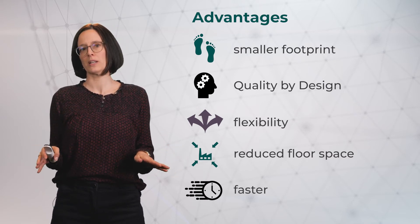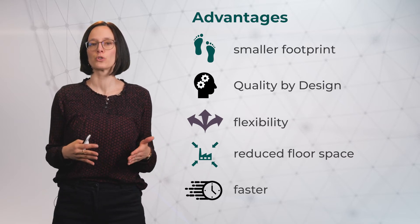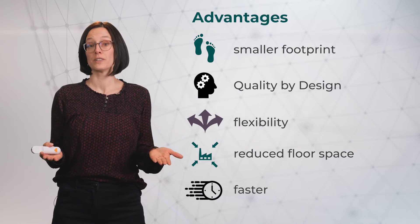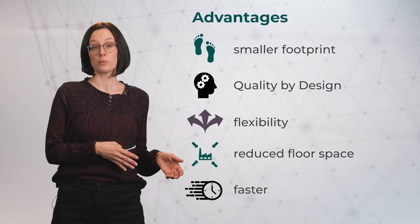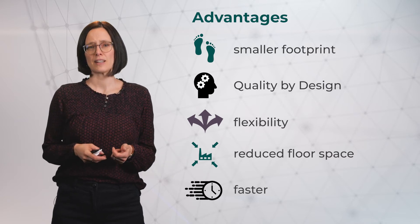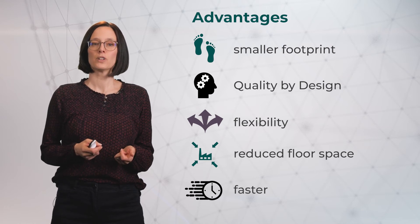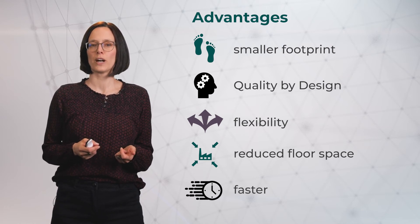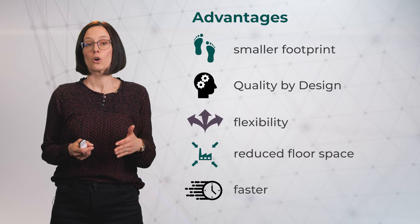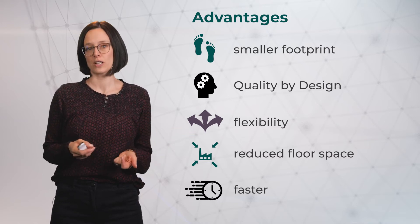Batch equipment does not work that way. A batch blender or a batch granulator have to have a certain fill level in order to function correctly — they cannot be operated almost empty to achieve good quality. So you need smaller equipment, and scale-up means you need to move from one size piece of equipment to the next, which can at times be very challenging. With continuous equipment, you would have the ability to run with lower throughput for a short time during development — perhaps several kilograms — or at high speed for a long time, producing in the range of hundreds of kilograms.